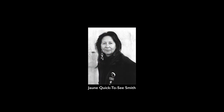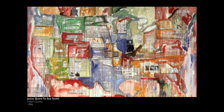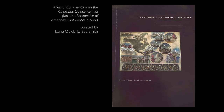Smith has been a leading contemporary American artist since the 1970s, and she works in a variety of media. Smith is an enrolled member of the Confederated Salish and Kootenai tribes of the Flathead Nation. She began making maps for exhibitions responding to the Columbus quincentennial in 1992, directly related to the beginnings of European colonization in North America.